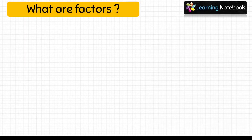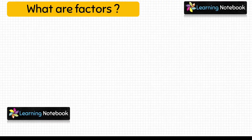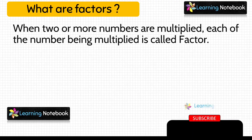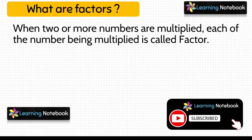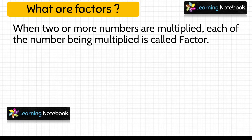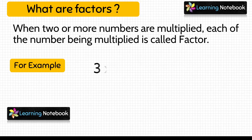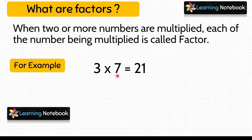Now let's understand what are factors. When two or more numbers are multiplied, each of the numbers being multiplied is called a factor. Let's consider an example: 3 multiplied by 7 equals 21. So here we have learned that 21 is the multiple of 3 and 7, and also 3 and 7 are factors of 21.